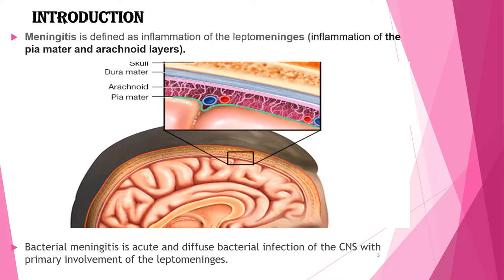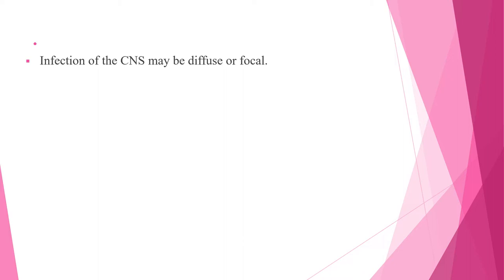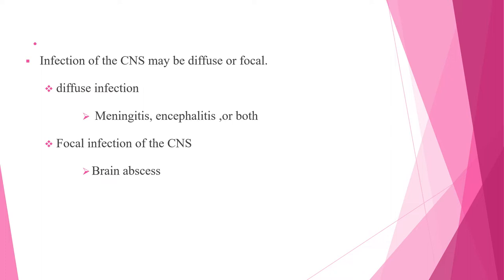Bacterial meningitis is an acute and diffuse bacterial infection of the CNS with primary involvement of the leptomeninges. CNS infections are classified according to the affected tissue: meningitis describes primary involvement of the meninges, whereas encephalitis indicates brain parenchymal involvement. However, these anatomic boundaries may be indistinct during infection.